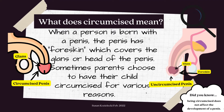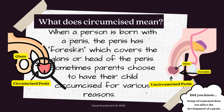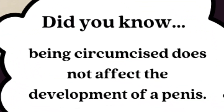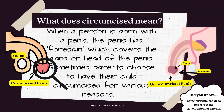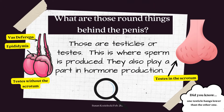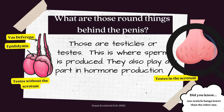What does circumcised mean? When a person is born with a penis, the penis has foreskin. This foreskin covers the glans, or the head of the penis. Sometimes parents choose to have their child circumcised for various reasons. Did you know being circumcised does not affect the development of a penis?